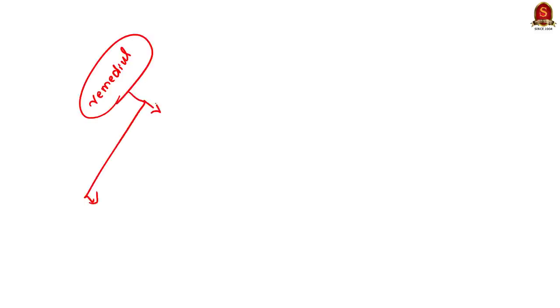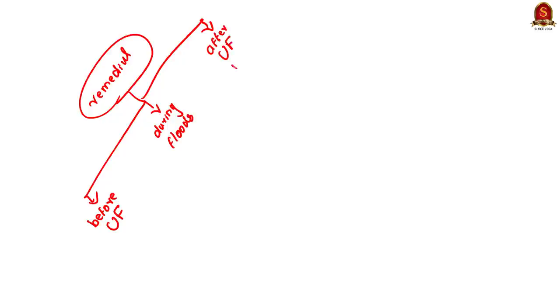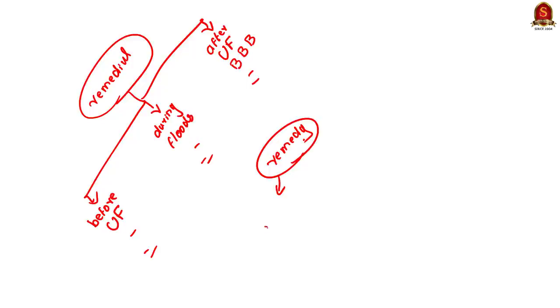For the remedial measures, you can divide them into three parts: measures that could be taken before urban flooding, measures that could be taken when urban flooding occurs, and how we can build back better after flooding. By brainstorming under these subheadings, you can generate points easily. You can also use the adaptation and mitigation approach — subheadings covering what remedial measures could be taken to mitigate urban flooding and what steps could be taken to adapt to it. You can use either the first approach or the adaptation-mitigation approach.